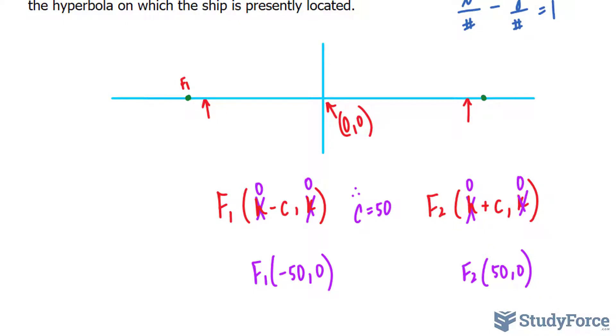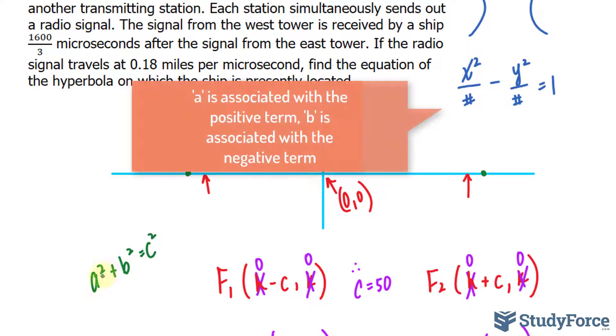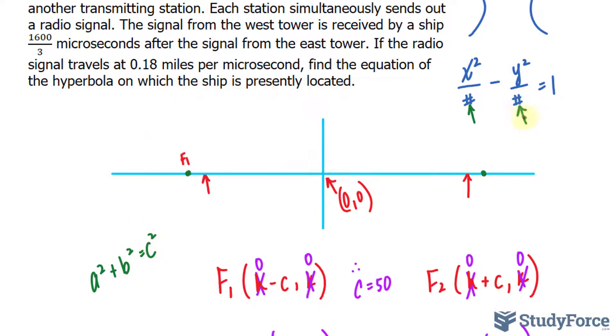From our C value, we know that there's a relationship, A squared plus B squared is equal to C squared, the Pythagorean theorem. When we find A squared, we place it right into there, and when we find B squared, we place it into there. The reason why we place A underneath X squared is because A is always associated with the positive term in the hyperbolic equation, and B is associated with the negative term.